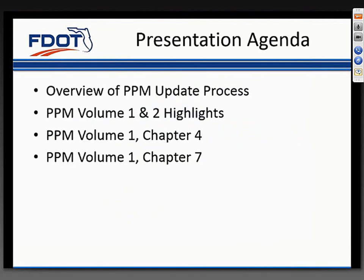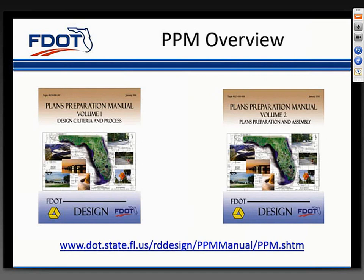Let's talk about what this presentation will include. We'll begin with an overview of the update process for changes to the PPM. Then we'll take a close look at some of the major changes to Volumes 1 and 2. In the highlights, we'll be skipping over Chapters 4 and 7 of Volume 1 and cover them individually, since the revisions in those chapters were pretty substantial. For those not familiar with the PPM, it's a two-volume set. Volume 1 covers design criteria and process, and Volume 2 covers plans preparation and assembly.